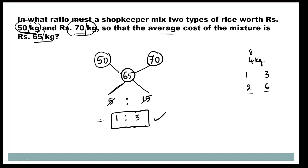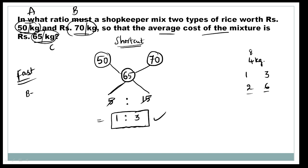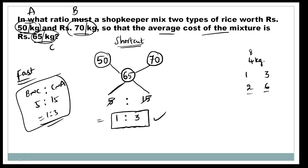In the allegation mixture method, we find the ratio of two mixtures using a diagram. The difference between 70 and 65 is 5, and the difference between 65 and 50 is 15. These differences are reversed in the diagram: the first difference becomes the second part and vice versa. So the ratio is 5 to 15, which is 1 to 3.